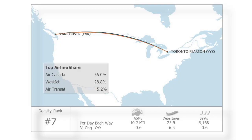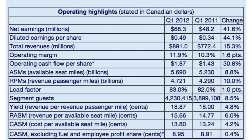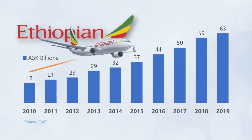Now let's look at some practical real-world examples. ASKs can be compared at the route level — here you can see the comparison of ASKs between Vancouver and Toronto to determine market share per airline. Air Canada has the majority of this market followed by WestJet. ASKs can also be analyzed at the airline level to better understand trends. Here we see the comparison of key operating indicators of an airline between Q1 and Q2 of 2012. The ASMs have grown by 8.8% from quarter to quarter. This metric can also give a very transparent indication of overall capacity growth over time. For example, Ethiopian Airlines has grown their ASKs at 15% per year since 2010.